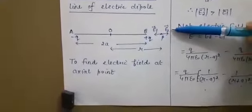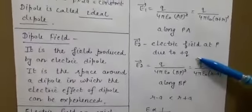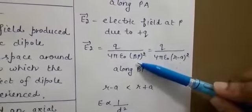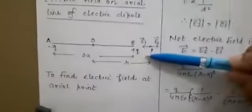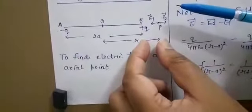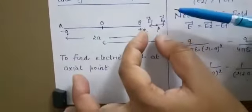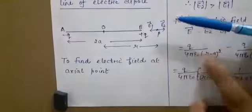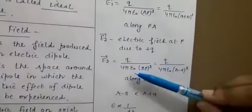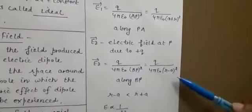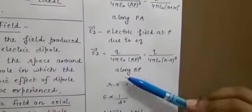Now for electric field E2, its magnitude and direction: E2 is the electric field at P due to plus q charge, given by q divided by 4πε₀ into BP². The total distance OP is r and OB is a, so the remaining distance BP equals r minus a. Therefore E2 equals q upon 4πε₀ into (r − a)². Its direction is from B to P, away from the positive charge.